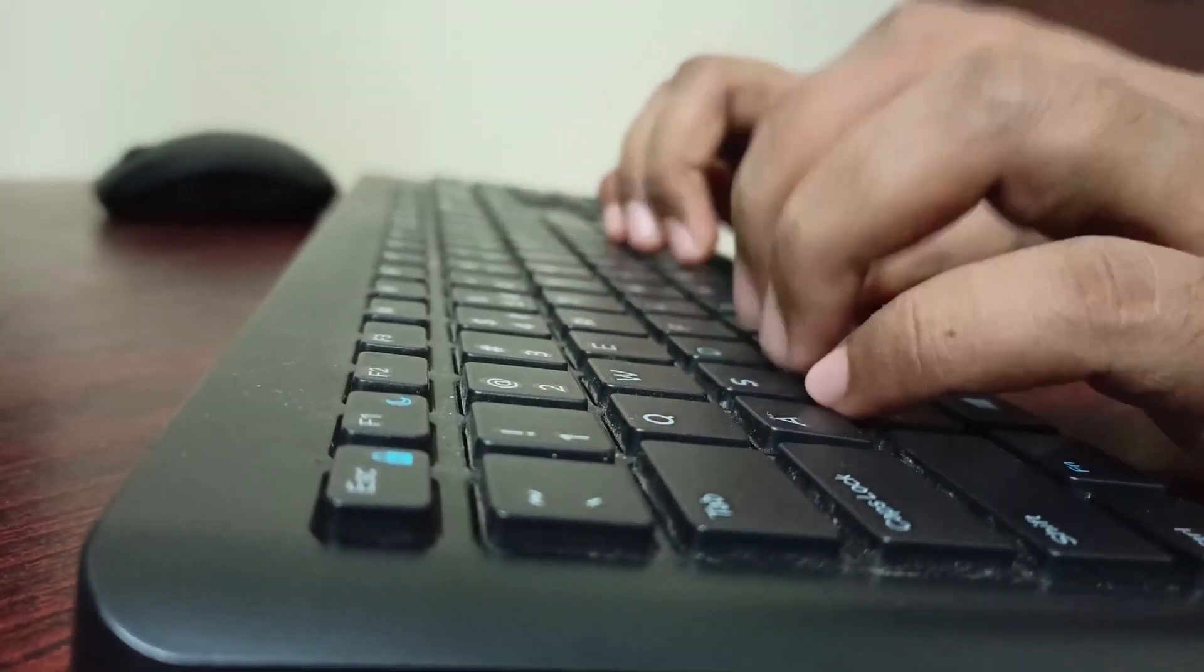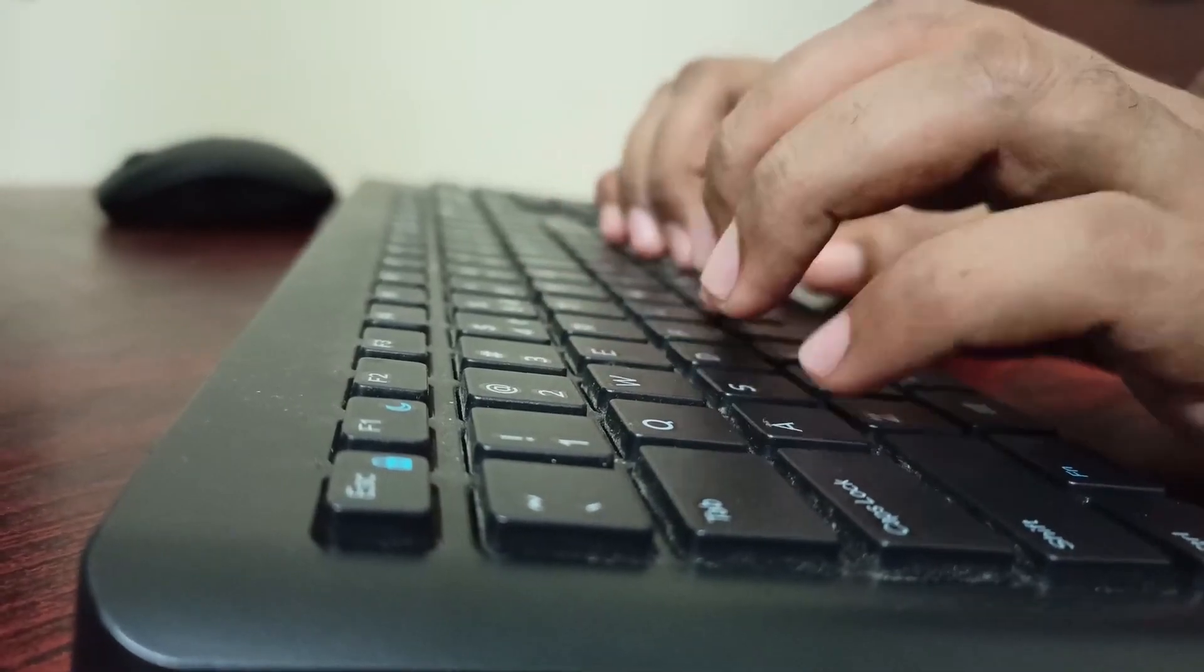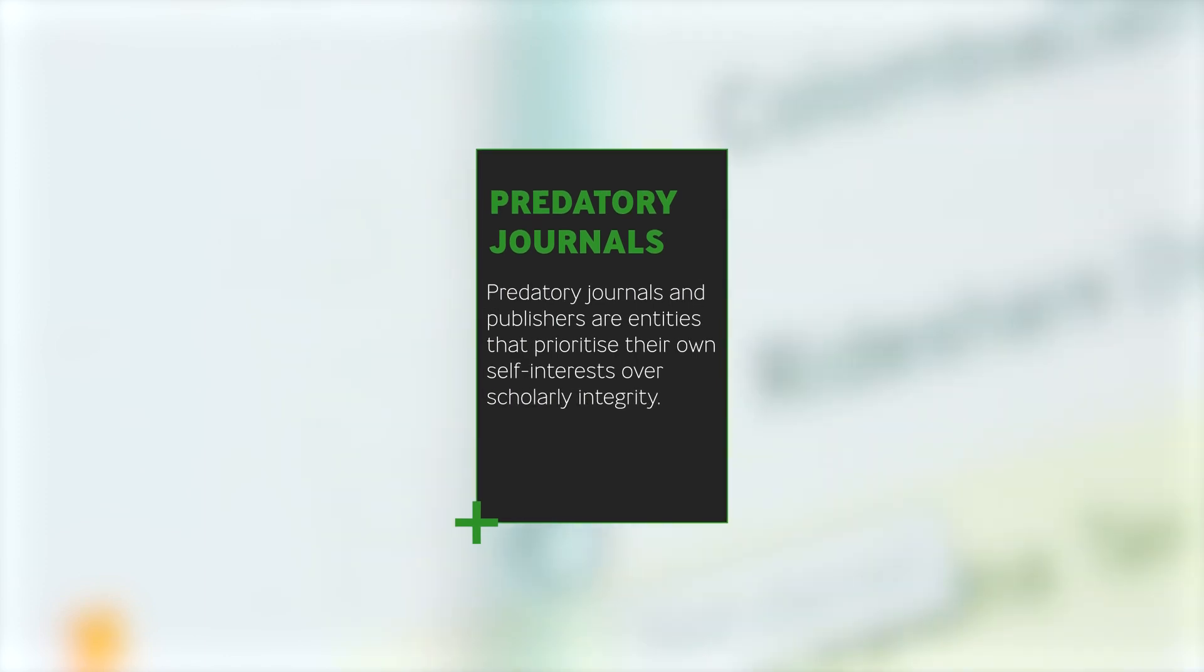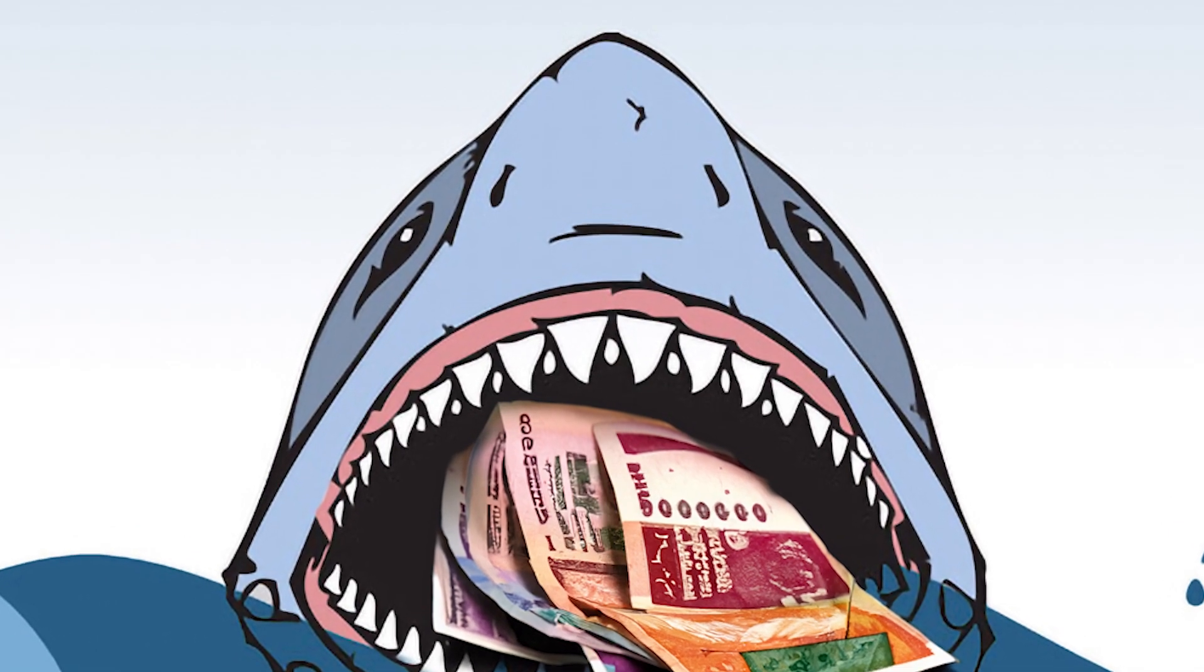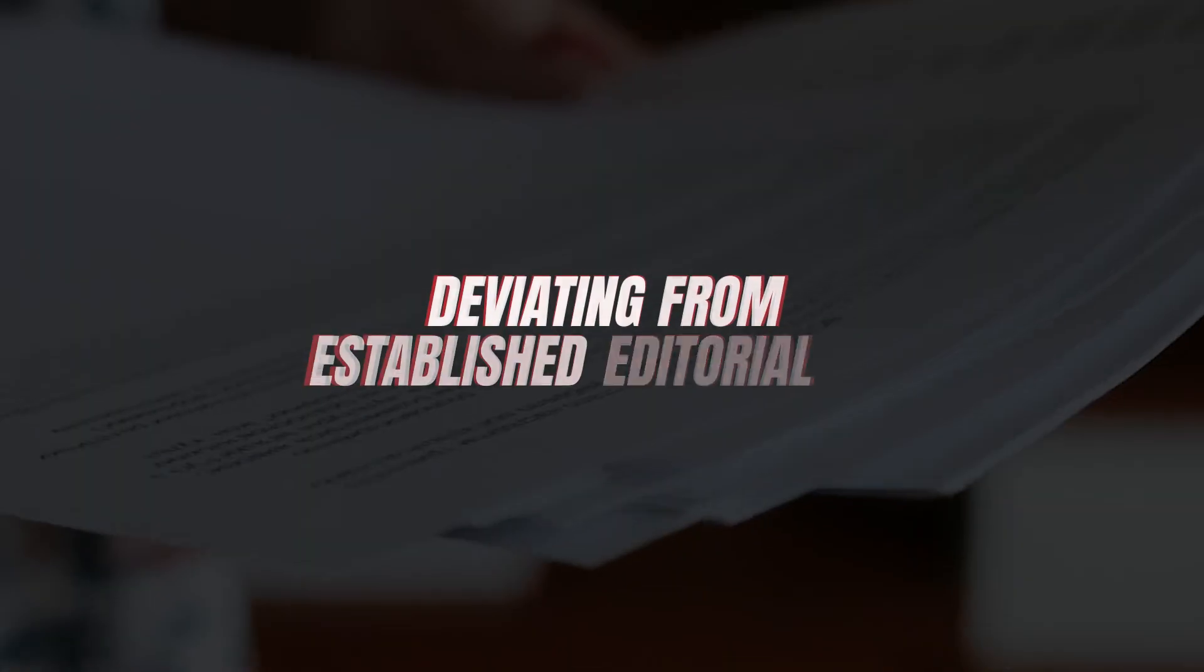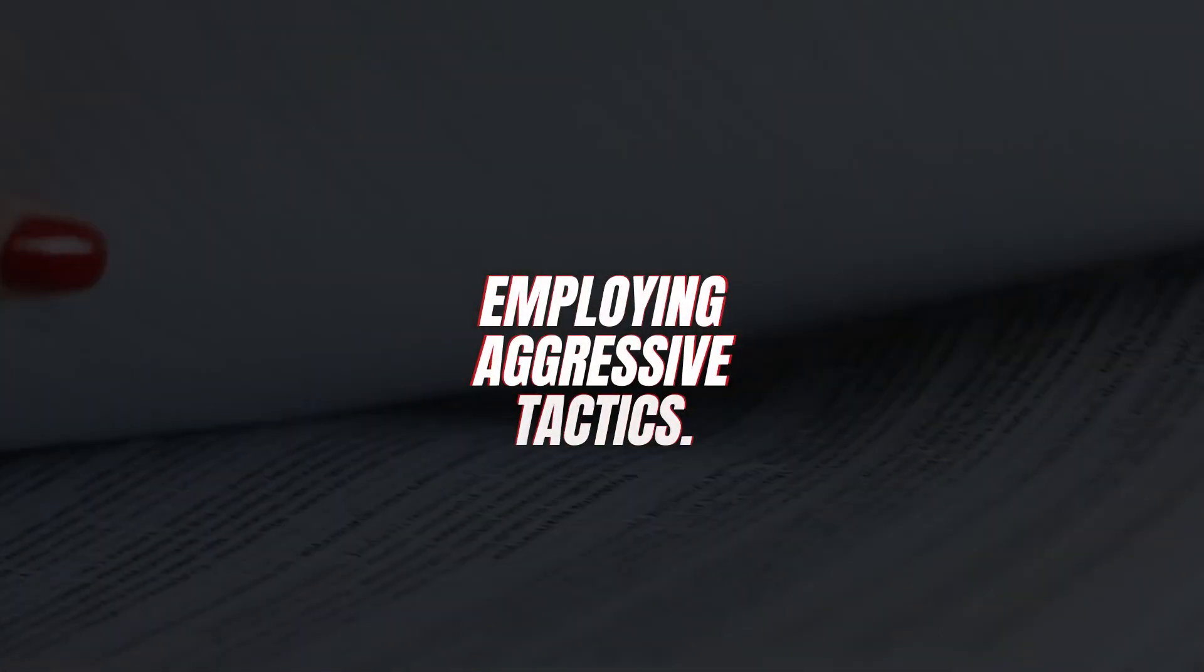The pressure to publish has led to a rise in unethical publishing practices, including predatory journals. Predatory journals prioritize their own interests over scholarly integrity. They engage in deceptive practices such as spreading false information, deviating from established standards, lacking transparency and employing aggressive tactics.